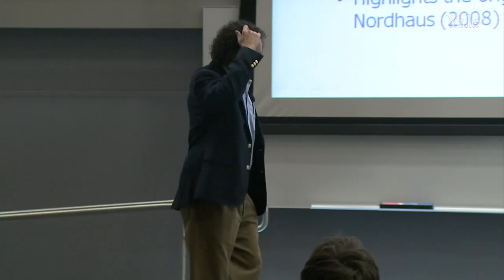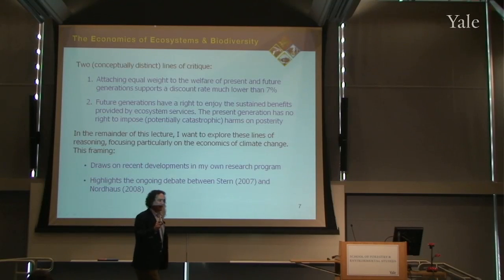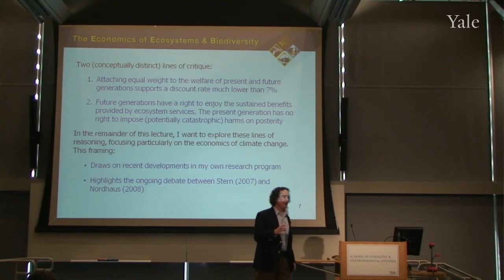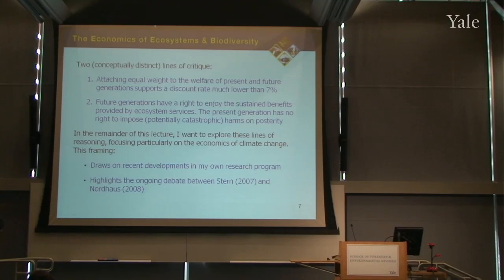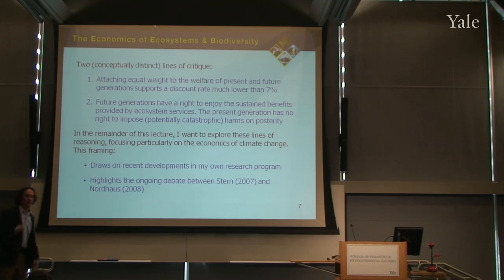A utilitarian is going to say we should attach equal weight to the well-being of present persons and future persons. If we take that moral premise, we can construct an argument that says we should be using a positive monetary discount rate, but one that's much lower than 7%. The reason we might discount future monetary values if we're utilitarians is if we believe that future generations will be better off than we are, so that at the margin, an extra unit of income is less valuable to them than it would be to us, the poorest and suffering people in 2011.